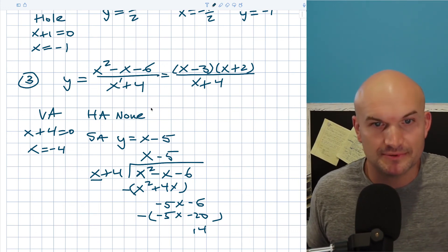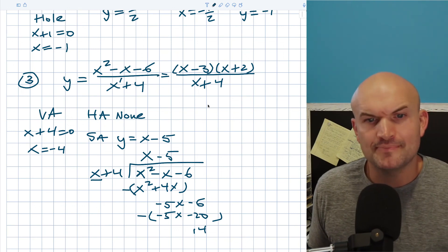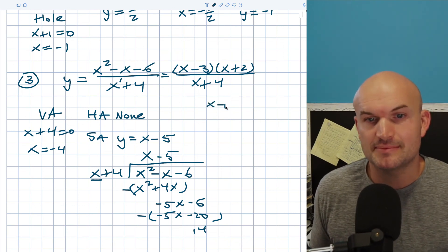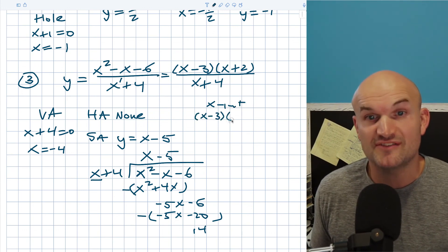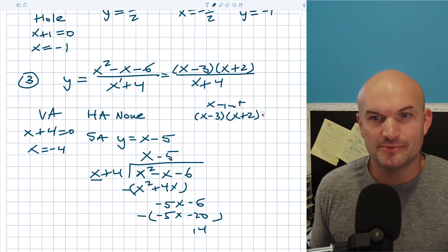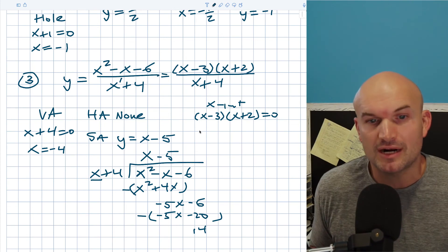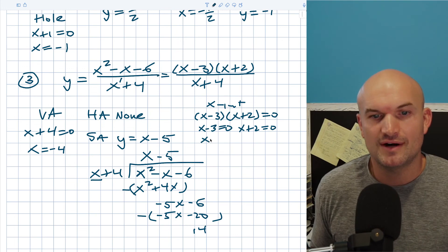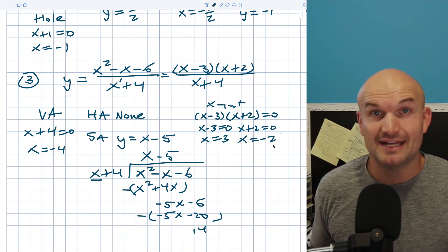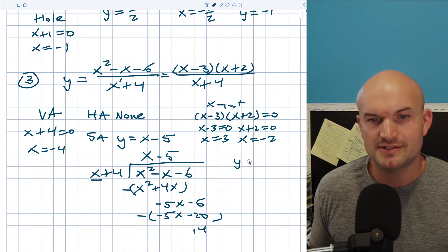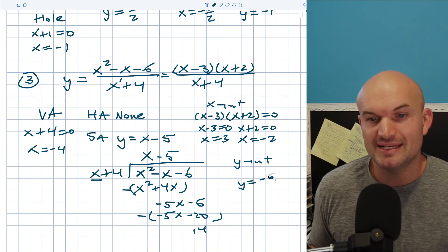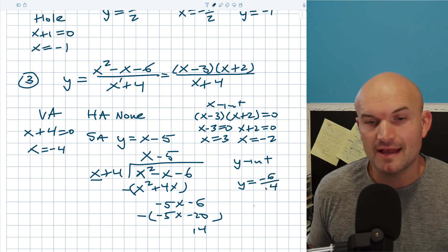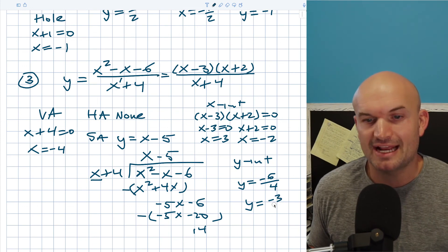So y equals x minus 5 is the slant asymptote; we do not have a horizontal asymptote. For the x-intercepts, set the numerator equal to 0 using the zero product property: x minus 3 equals 0 gives x equals 3, and x plus 2 equals 0 gives x equals negative 2. For the y-intercept, take the constant over constant: negative 6 over positive 4, which reduces to y equals negative three-halves.